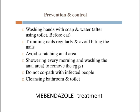Preventive measures include treatment of all family members with anti-helminthic drugs, frequent hand washing with soap and water after using the toilet and before eating, trimming nails regularly, avoiding nail biting, avoiding scratching the anal area, showering every morning and washing the anal area to remove eggs, avoiding contact with infected people, and cleansing bathrooms and toilets. If infected, the patient is treated with the anti-helminthic drug mebendazole.